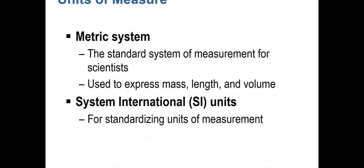The metric system is used to express mass, length, and volume — something you cannot do with the imperial system. The imperial system is what we use in the United States, using feet and pounds and so forth, whereas the metric system is the globally accepted system because it's much easier to convert different units. Examples include the kilogram, the meter, and the centimeter. An extension of the metric system is the system of international units, used for standardizing units of measurement.